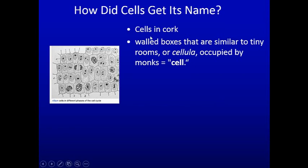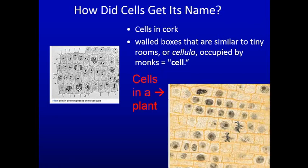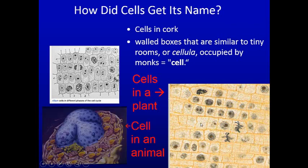How did cells get their name? The first cells observed were in cork. The person who observed them called them cells because of the 'cella,' the tiny rooms monks used to live in — what we now call a jail cell. The first cells seen looked like little boxes. Then they discovered that plants have cells too — not shaped like boxes, but they have cells with a nucleus.